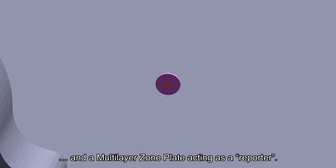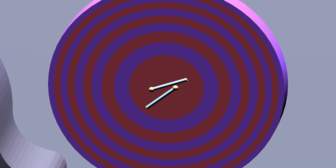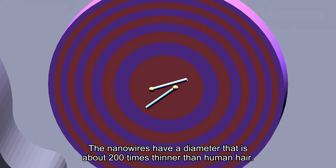Here we zoom in on two very small nanowires that show promising properties as novel photovoltaic devices. The nanowires have a diameter that is about 200 times thinner than human hair.